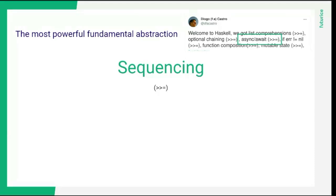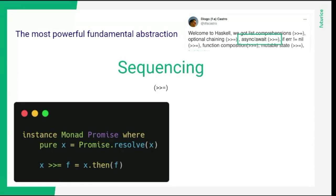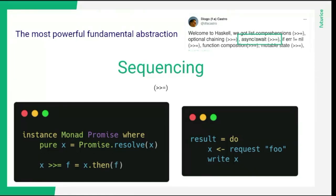Async/await is also interesting because the implementation is very easy. Promise is built into JavaScript; Rust has futures. To transform a plain value to a promise, we use resolve, which immediately creates a promise that resolves to x. The sequencing is the 'then' function. For async/await, we have do notation, and because it works for everything that is chainable and can be sequenced, do notation is basically async/await — but it works not only for promises, which is also why async/await is limiting: it only works for promises, but it could do so much more.